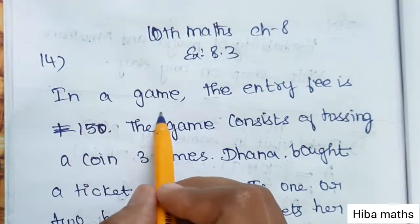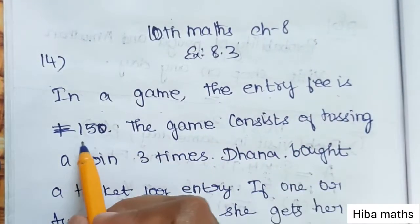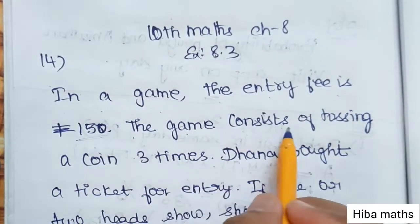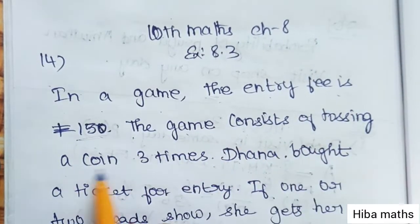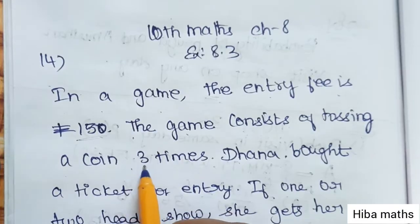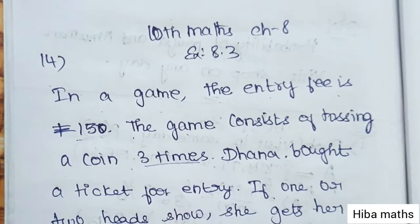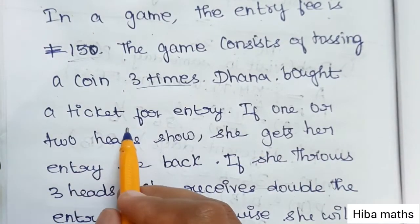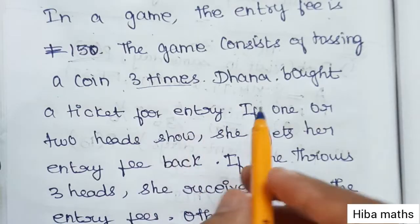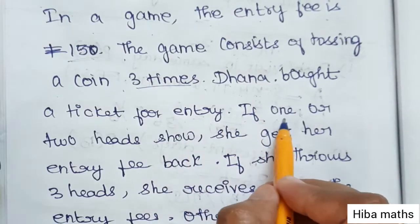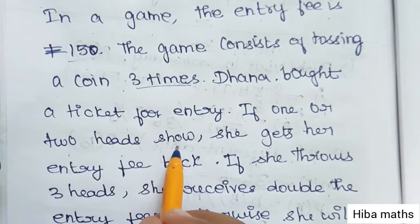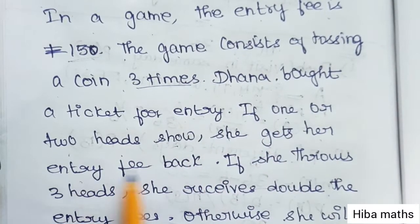In your game, the entry fee is 150. The game consists of tossing a coin 3 times. Donna bought a ticket for entry. If one or two heads show, she gets her entry fees back.